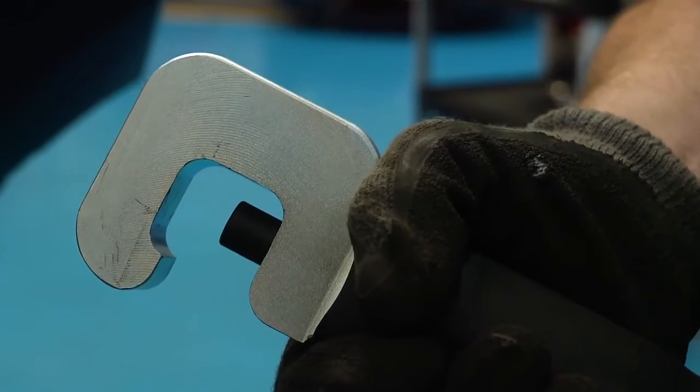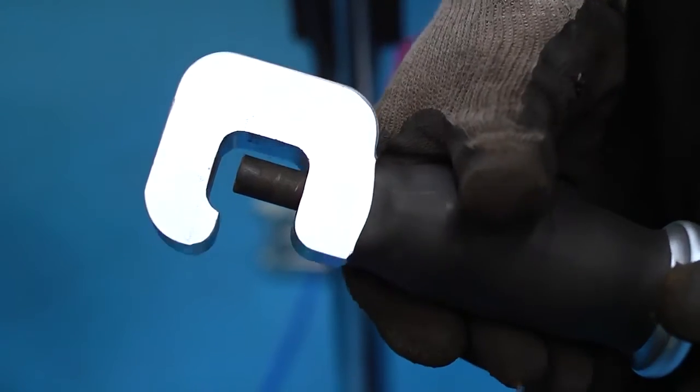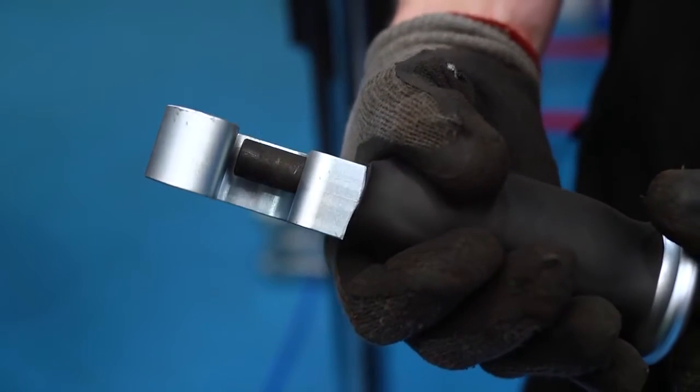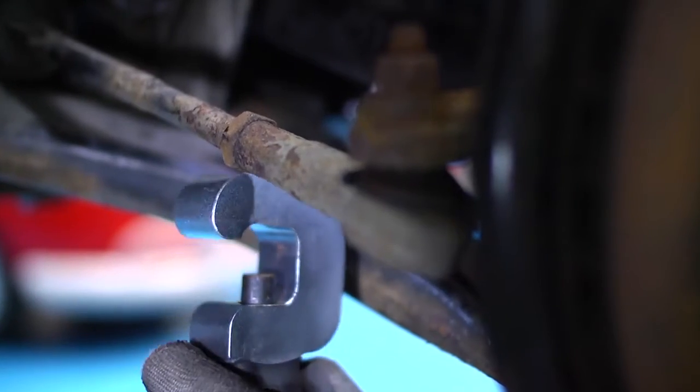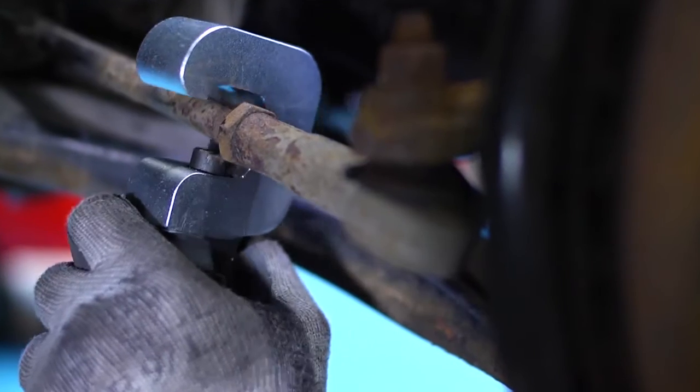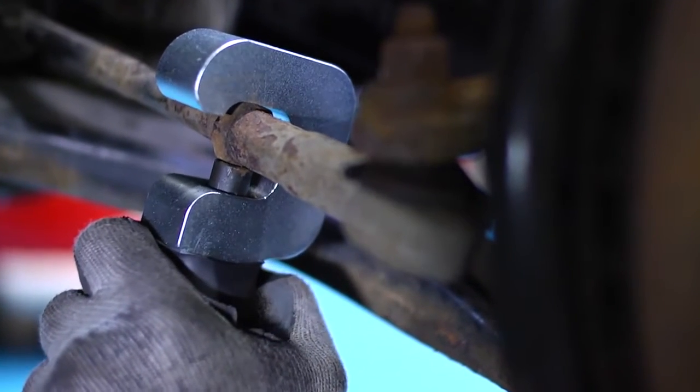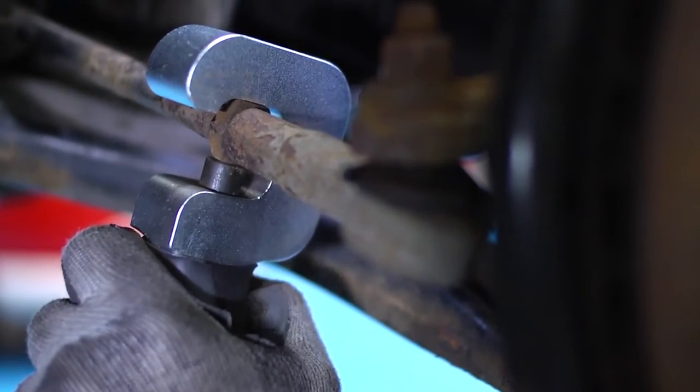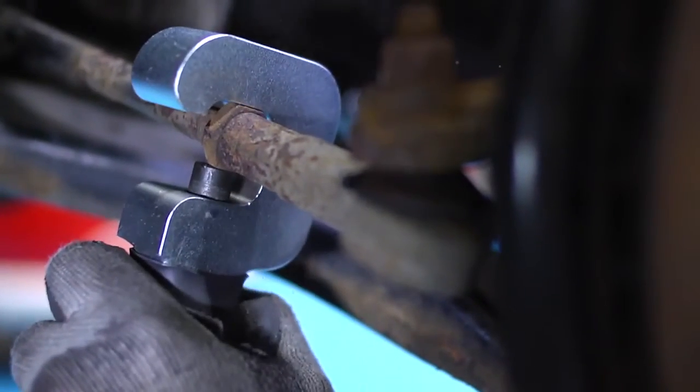This new nut removal tool uses the power of the air hammer to shock and vibrate the seized fixing. Ideally matched to the laser 6031 air hammer, the tool delivers 2200 hammer blows per minute, freeing it off in just a matter of seconds.